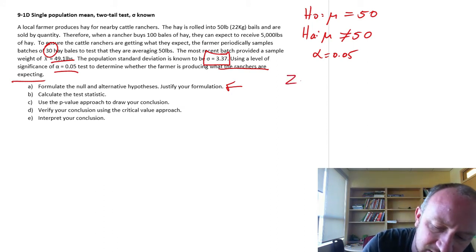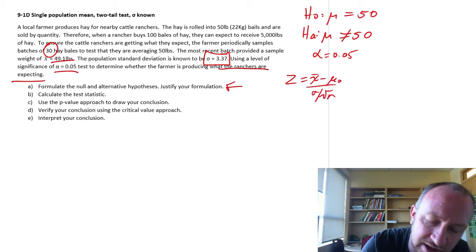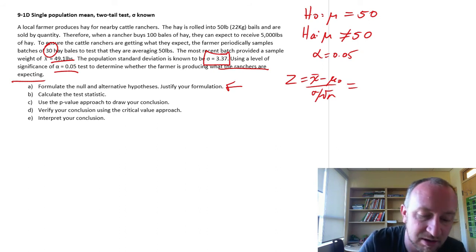Part B, test statistics. So again, we go to our formula sheet and we pull up this test statistic formula for a single population mean. And then we're just going to put in our numbers.